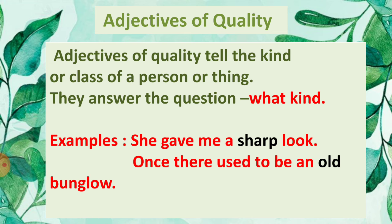Another example: 'Once there used to be an old bungalow.' What kind of bungalow? Old. So 'old' is also an adjective of quality. Adjectives of quality tell the kind or class of a person or thing.